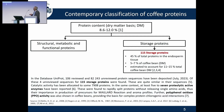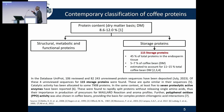We can divide plant proteins into those which are responsible for structural, metabolic, and functional properties, and the storage proteins. The 11S designation comes from the sedimentation coefficient and is related to the molecular mass of the proteins. It comprises about 45% of the total proteins in the endosperm of the coffee. Some literature gives 5% to 7% of the dry matter from the 11S storage protein, while other literature gives up to 15% of the coffee bean dry matter.